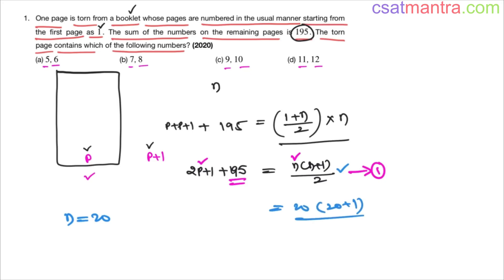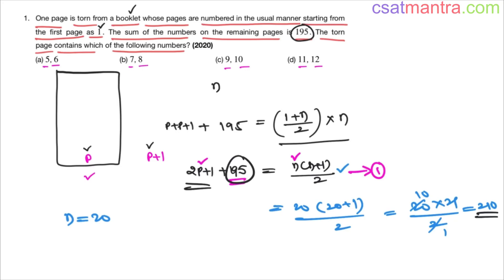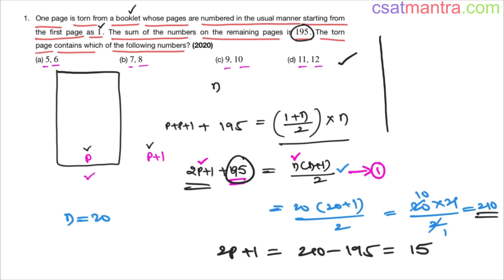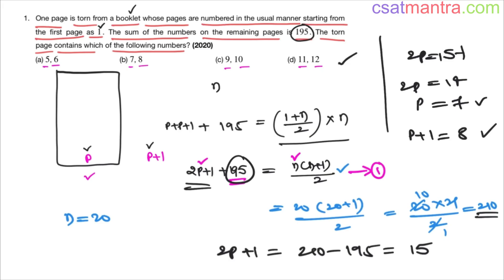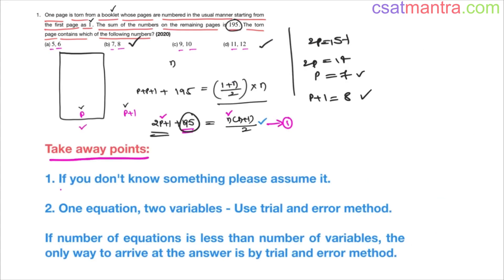Let's try n = 20: 20 × 21/2 = 210. Since 210 is greater than 195, p will be positive. Substituting into the equation: 2p + 1 = 210 − 195 = 15, so 2p = 14, giving p = 7 and p+1 = 8. The torn page contains 7 and 8. Checking the options, the answer is B.